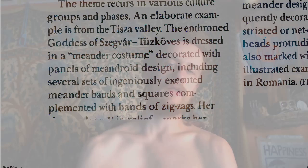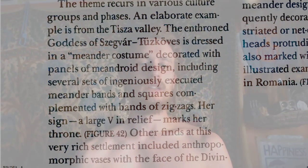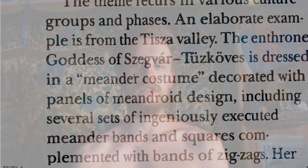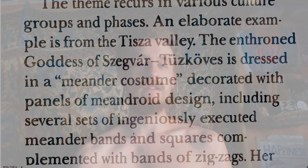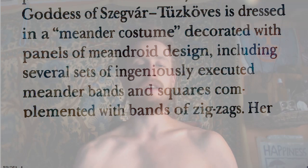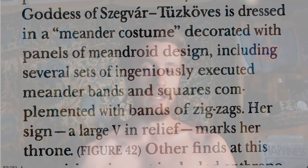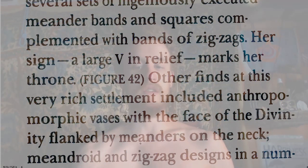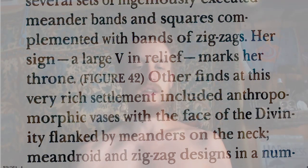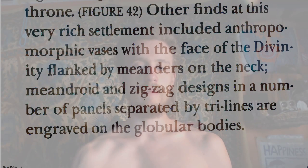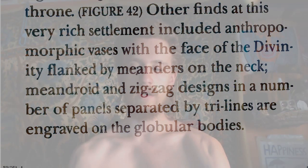The theme occurs in various culture groups and phases. The enthroned goddess of Svevar Tsukos is dressed in a meander costume decorated with panels of meandroid design, including several sets of ingeniously executed meander bands and squares complemented with bands of zigzags. Her sign, a large V in relief, marks her throne. Other finds from this very rich settlement include anthropomorphic vases with the face of a divinity flanked by meanders on the neck, with meandroid and zigzag designs in panels separated by trilines engraved on the globular bodies.